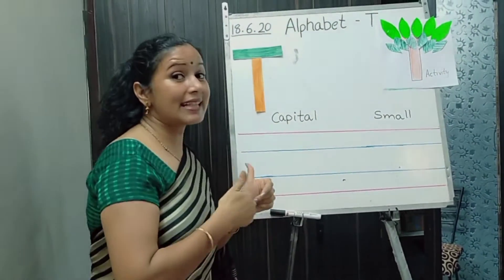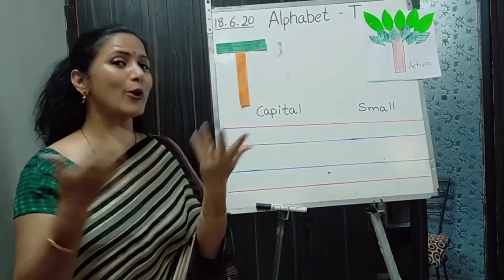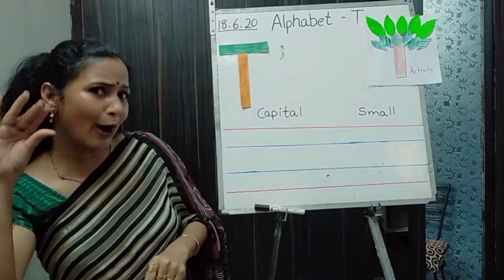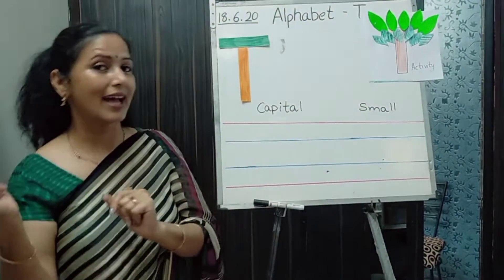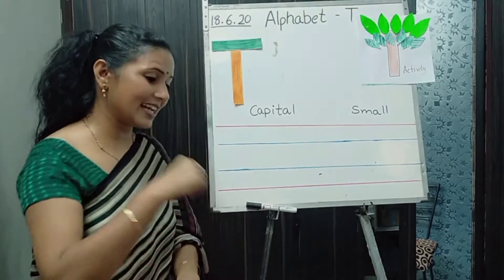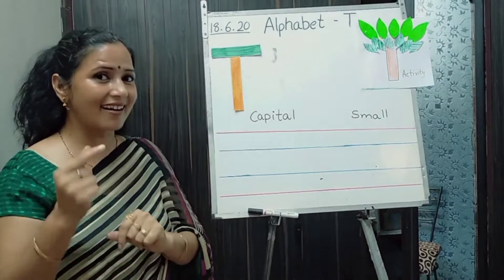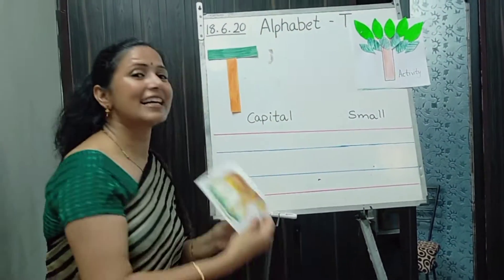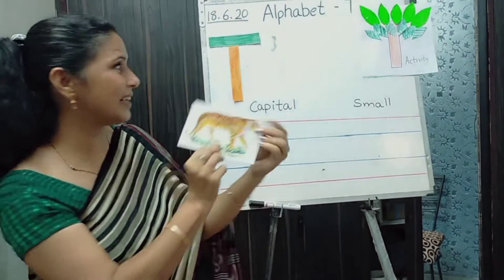Can you make the letter sound? I will show you how. Let's learn about letter T. Ta-ta-ta-ta — Tiger, tiger. Tiger is a wild animal.